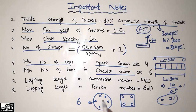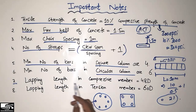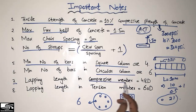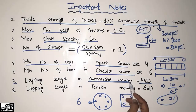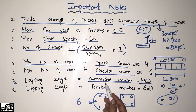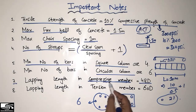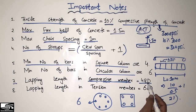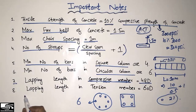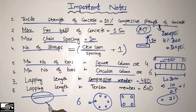The seventh point is that the lapping length of steel reinforcement in a compression member is 48d, where d is the diameter of the bar. Compression members include columns. You can find the lapping length in columns using the formula 48d, where d is the diameter of the smallest bar being lapped.